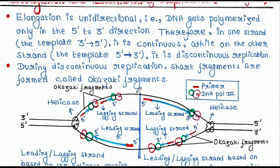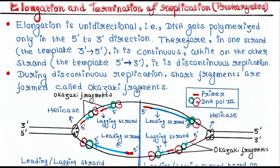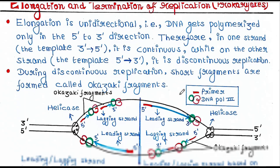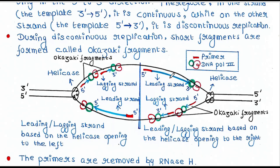This is actually a concept where many of us have strong doubts, so I will try to clear those doubts. I have divided the replication bubble into two halves. First, we will concentrate on the right side. Here we have the helicase, and this helicase is moving in this direction, opening the double strands.